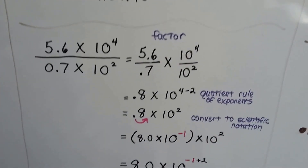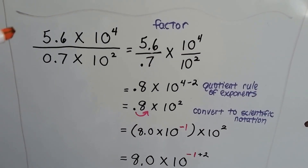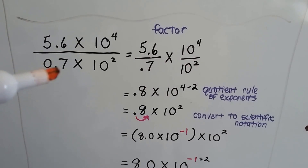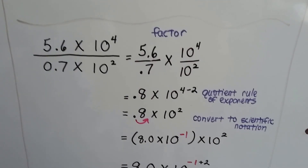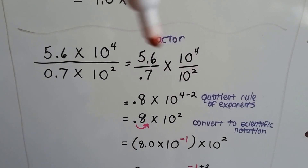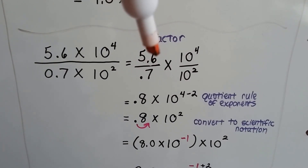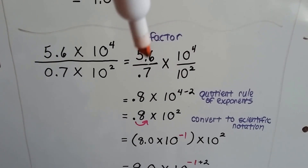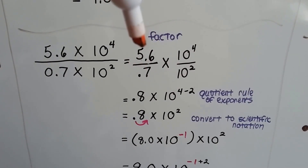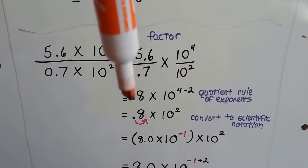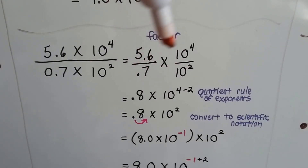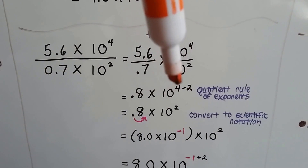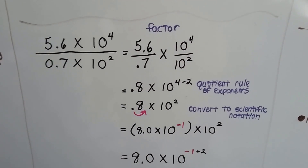Here's another division example. We've got 5.6 times 10 to the 4th power over 0.7 times 10 to the 2nd power. We factor and split them up. 5.6 divided by 0.7 is essentially 56 divided by 7 — and 7 times 8 is 56 — so we're going to get 8 for this side, and we apply the quotient rule: 10 to the 4th minus 2.